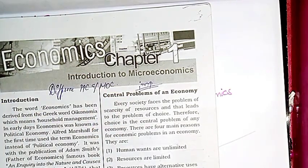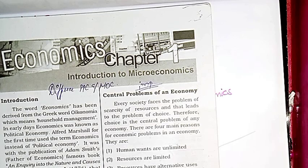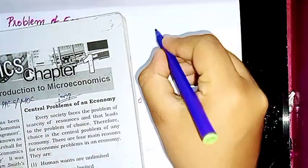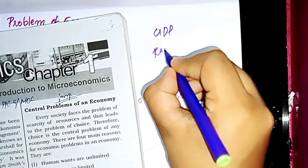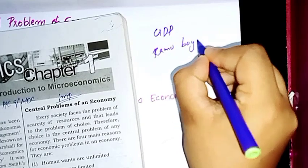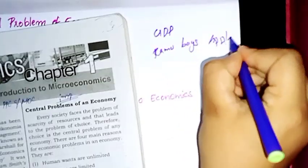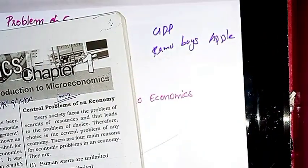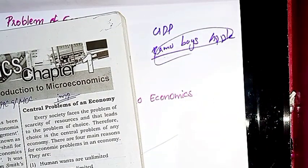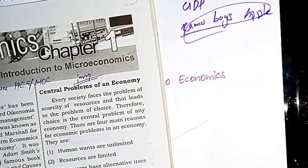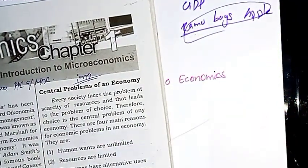Now we have an example of national income. GDP is called national income. This is not microeconomics, because it is not a study of a small portion. It is not a single part of the economy — it studies the economy as a whole.